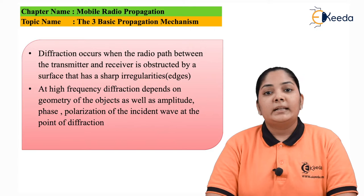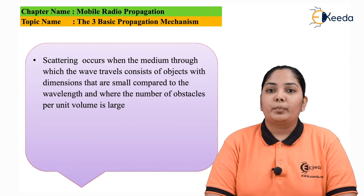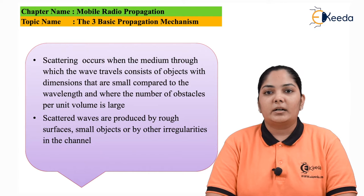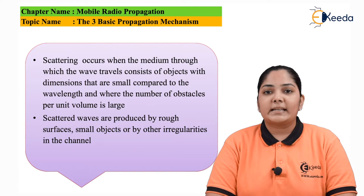Let us now move to the last method through which radio propagates, called scattering. In scattering, the electromagnetic waves that are propagating are obstructed by objects that are very small with respect to the wavelength of the communication. Wavelength is the parameter through which frequency is decided. For example, at a higher frequency of 10 GHz, the wavelength will be in terms of millimeters. As the radio signal moves through the channel, various objects of millimeter length or less than the wavelength cause scattering to take place.